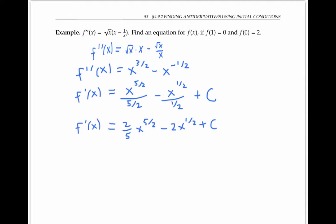Now I've got an expression for f prime of x, but I need an expression for f of x, which is the antiderivative of f prime. And so I'll antidifferentiate again. So now I have two fifths times x to the seven halves over seven halves, minus two times x to the three halves over three halves. The antiderivative of a constant C is C times x, and then I'll add on a new constant D.